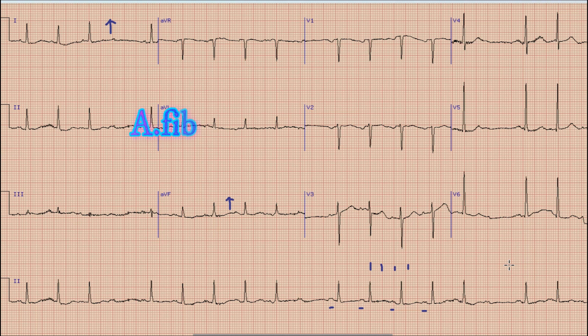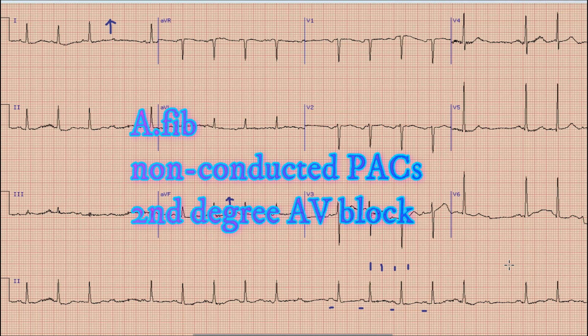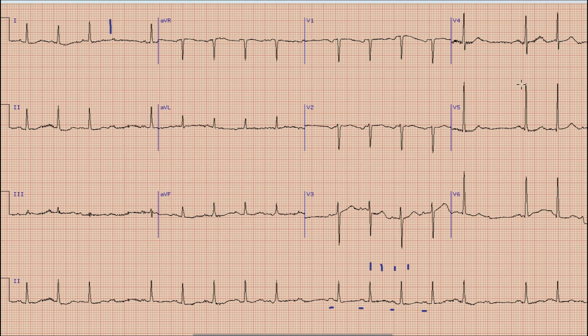One of the causes of irregularity is obviously atrial fibrillation, which we have already excluded due to the presence of P waves. Other causes include non-conducted PACs (premature atrial contractions not being conducted), or some kind of AV block such as Wenckebach or Mobitz I, or second-degree AV block. We'll find out what is going on here.